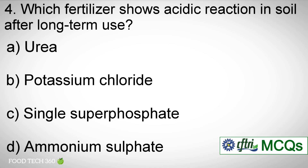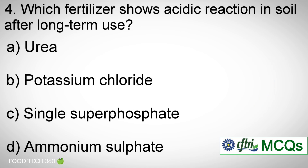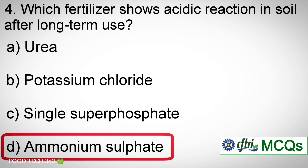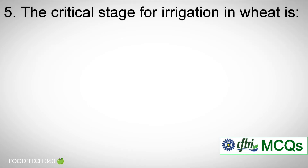Question number four: Which fertilizer shows acidic reaction in soil after long-term use? Options: a) Urea. b) Potassium chloride. c) Single super phosphate. d) Ammonium sulfate. Correct answer: d) Ammonium sulfate.